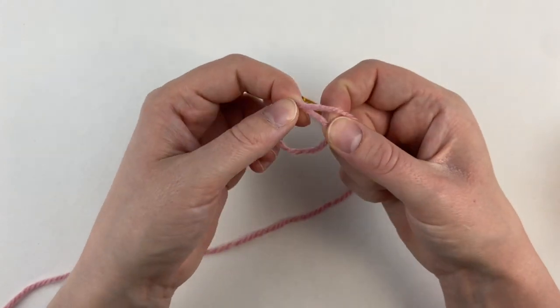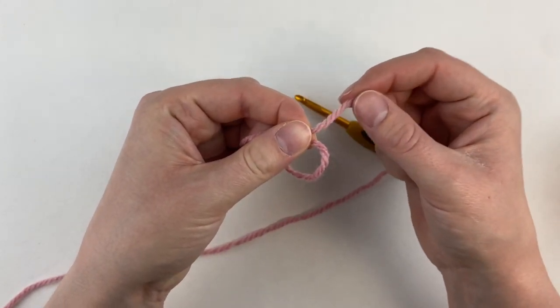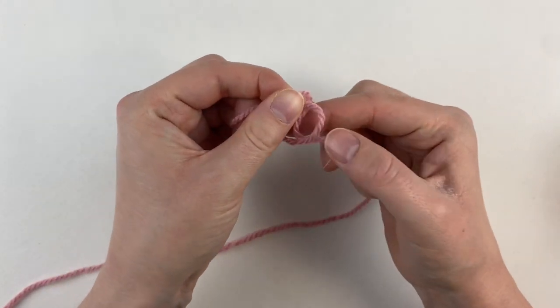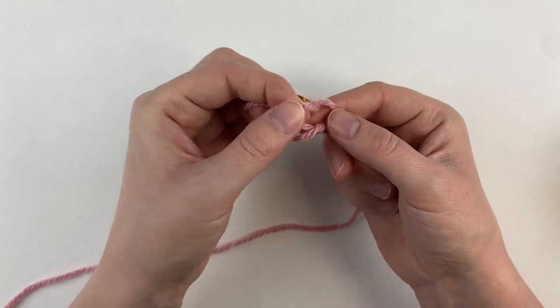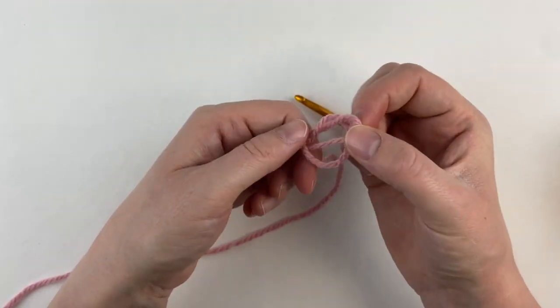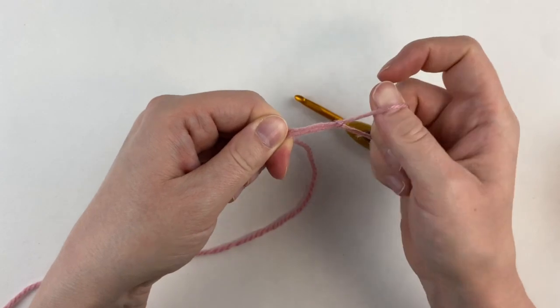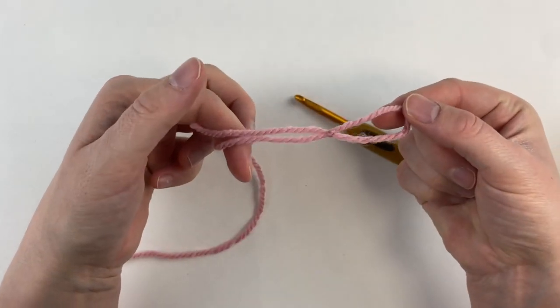I'm then going to take my fingers out and with this long tail I'm going to pass it up through the middle of that loop, grab hold of it and pull. And there you have your slipknot.